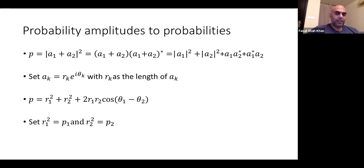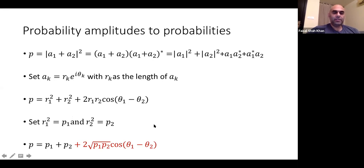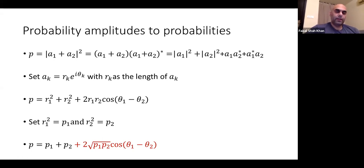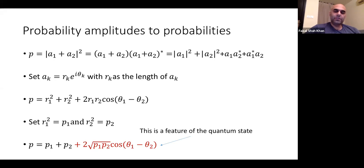Declaring r1² as p1 and r2² as p2, I can connect probabilities and probability amplitudes. The total probability that a photon goes through one path or the other and gets detected is still the sum of the two probabilities p1 + p2, but there's an additional term — which physicists call the interference term. That is new and not something you'd expect to see if you followed classical probability. This is actually a quantum feature, a feature of the quantumness of the photon.